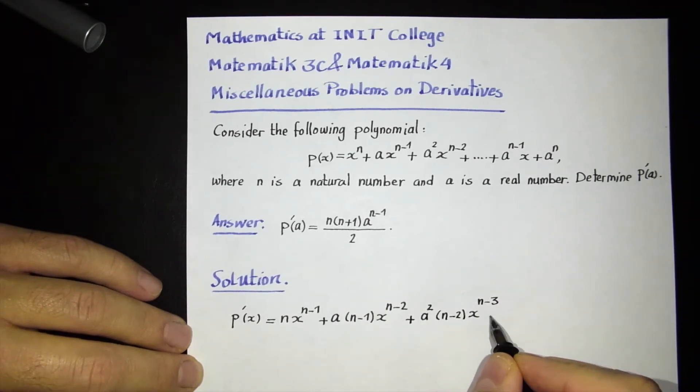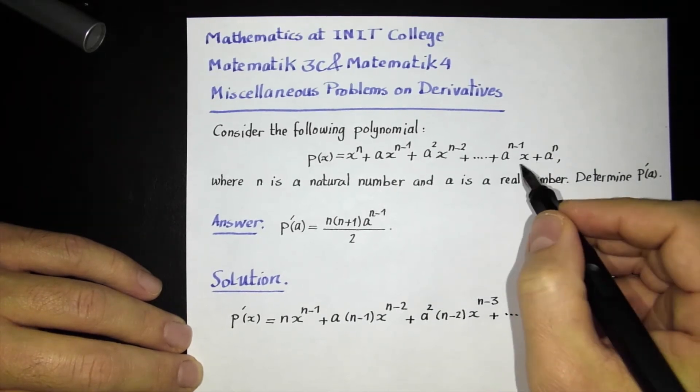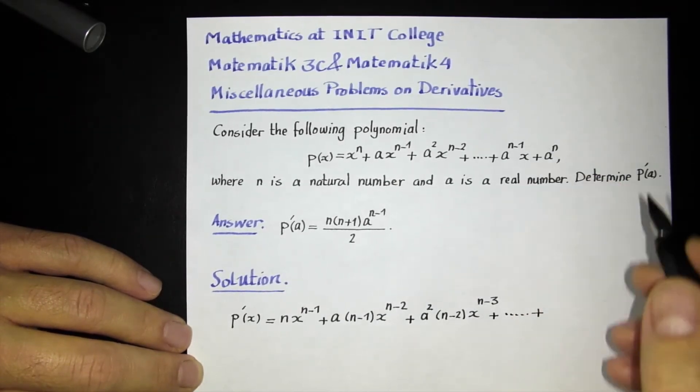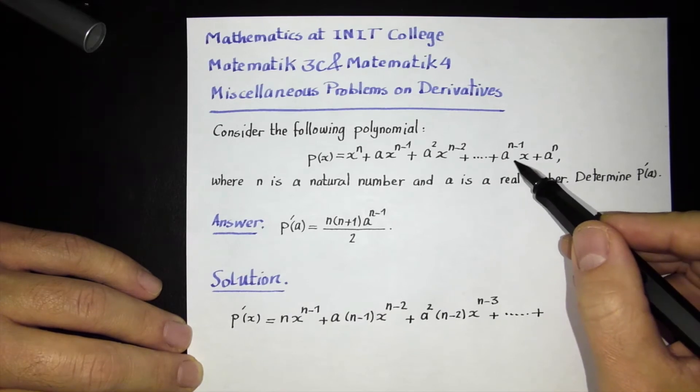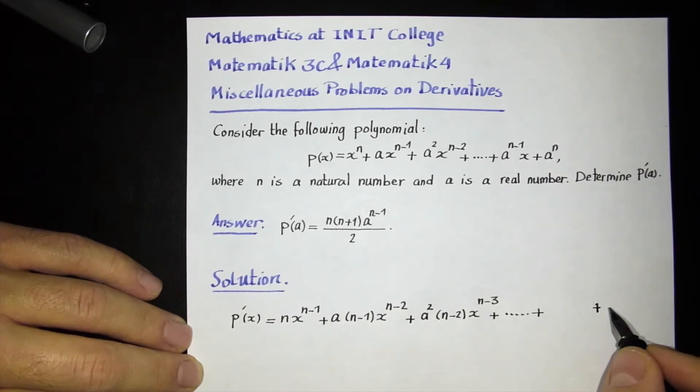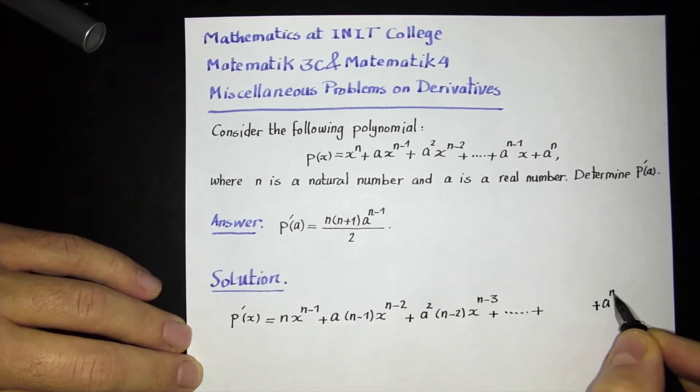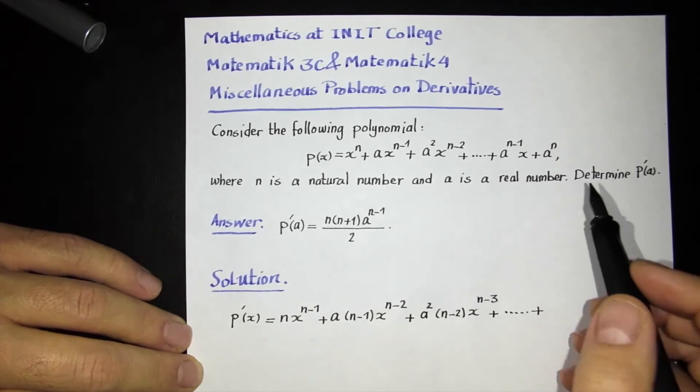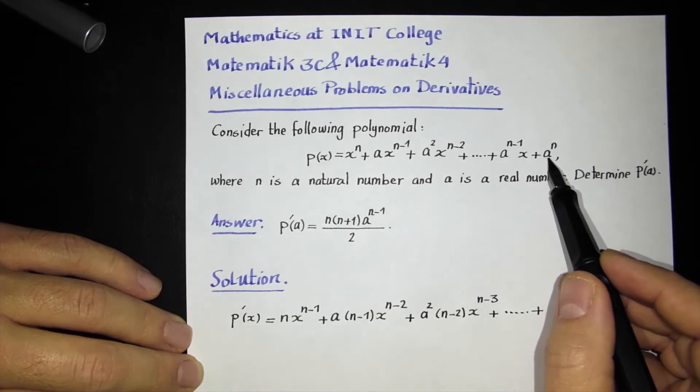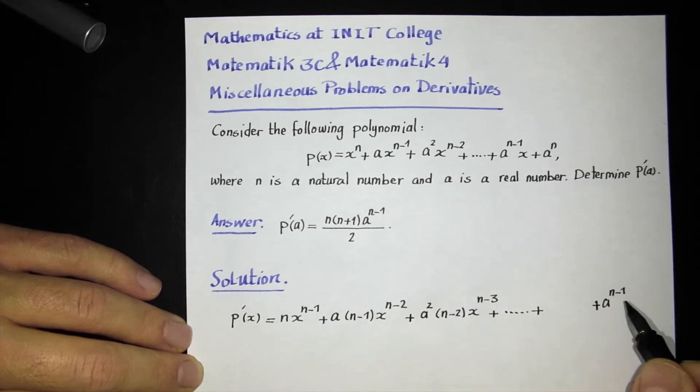I can continue this and reach these last two terms. So this term, let me give a little space here. I want to write the previous term as well. If I differentiate this, a to the n minus 1 is a constant, so I just write a to the n minus 1. The derivative of x is simply 1, so I don't need to write anything. And the derivative of a to the n, because a and n are constants, a to the n is a constant, so the derivative is 0.